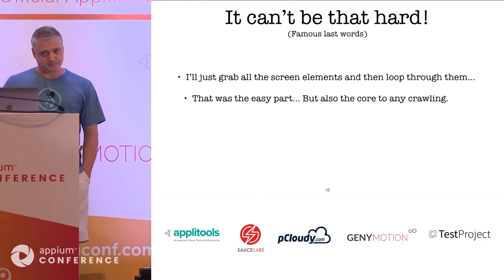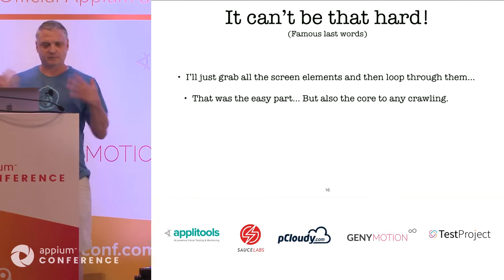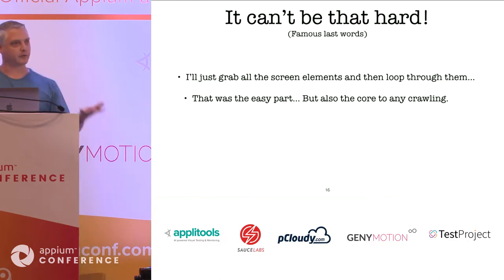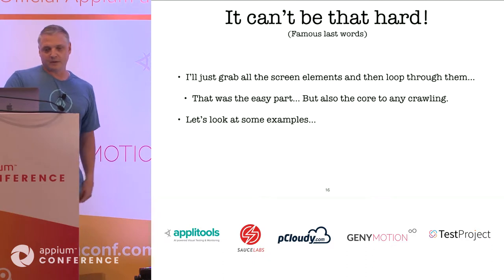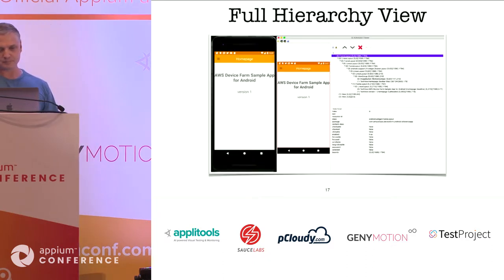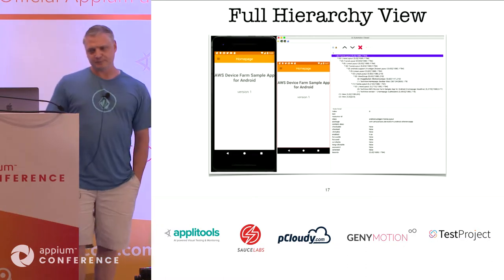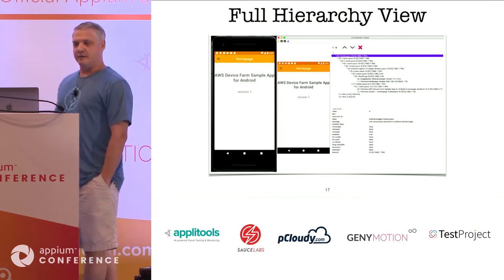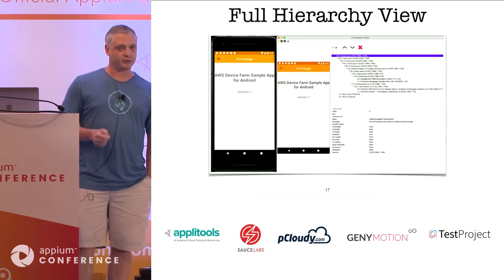So now I'm getting into the part about building it. It really couldn't be that hard. My thought was: just get all the UI elements that are apparently on my view and loop through them, click each one, and look for some type of action to occur. That was the easy part, but also the core of any crawler. So let's go look at some examples. Those of you may have seen this before — this is the hierarchy viewer in the Android SDK. There are better ones now, like the Appium desktop app has a nice hierarchy viewer.